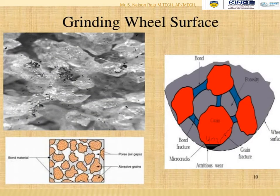These three diagrams represent the surface images — also called microstructural images — of a grinding wheel. The first diagram shows scanning electron microscope images of a cutting wheel. The second diagram represents how the abrasive particles bond together. In the third image, the red region represents micro-cracks and the gray region represents grain fracture structures.